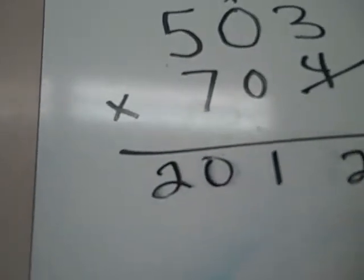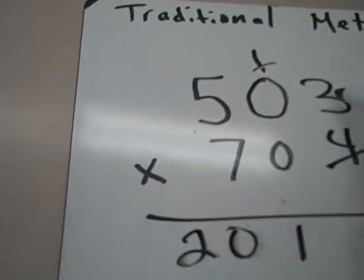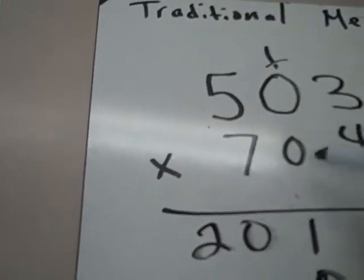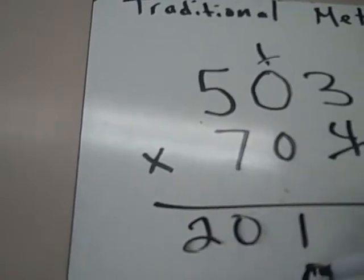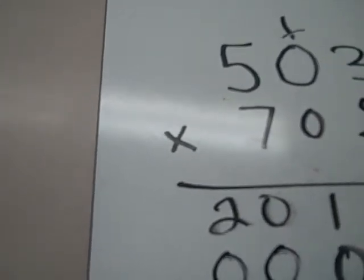Now I'm done with my 4, so I'm going to put a 0 underneath the 4. And now I'm going to move over to this 0. 0 times 3 is 0. Notice where I put the answer. I put it under the 0 because that's the number we're working with. 0 times 0 is 0. 0 times 5 is also 0.